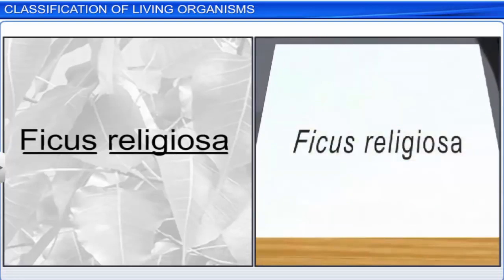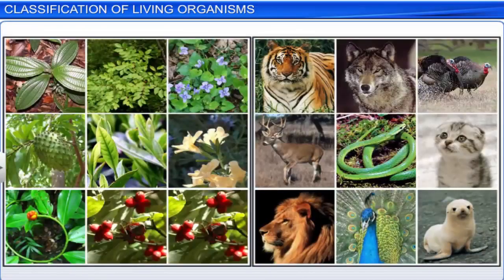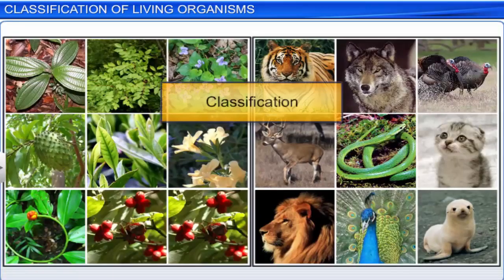Finally, the first word of the genus starts with a capital letter and the specific epithet starts with a small letter. Apart from assigning scientific names to living organisms, they must be aptly organized for easy study. The process of grouping anything into convenient categories based on easily observable characters is known as classification.